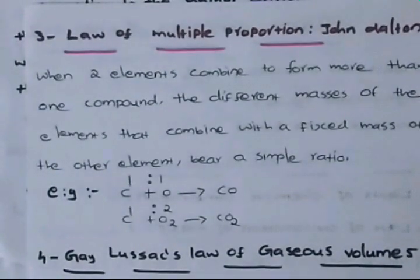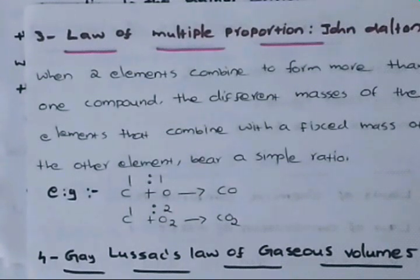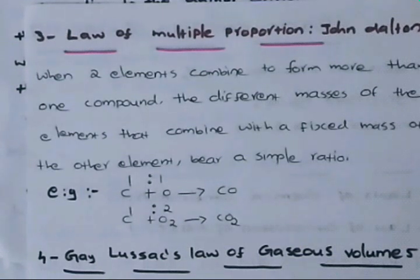The law of multiple proportion is given by John Dalton. When two elements combine to form more than one compound, the different masses of the element that combines with the fixed mass of the other element bear a simple ratio.